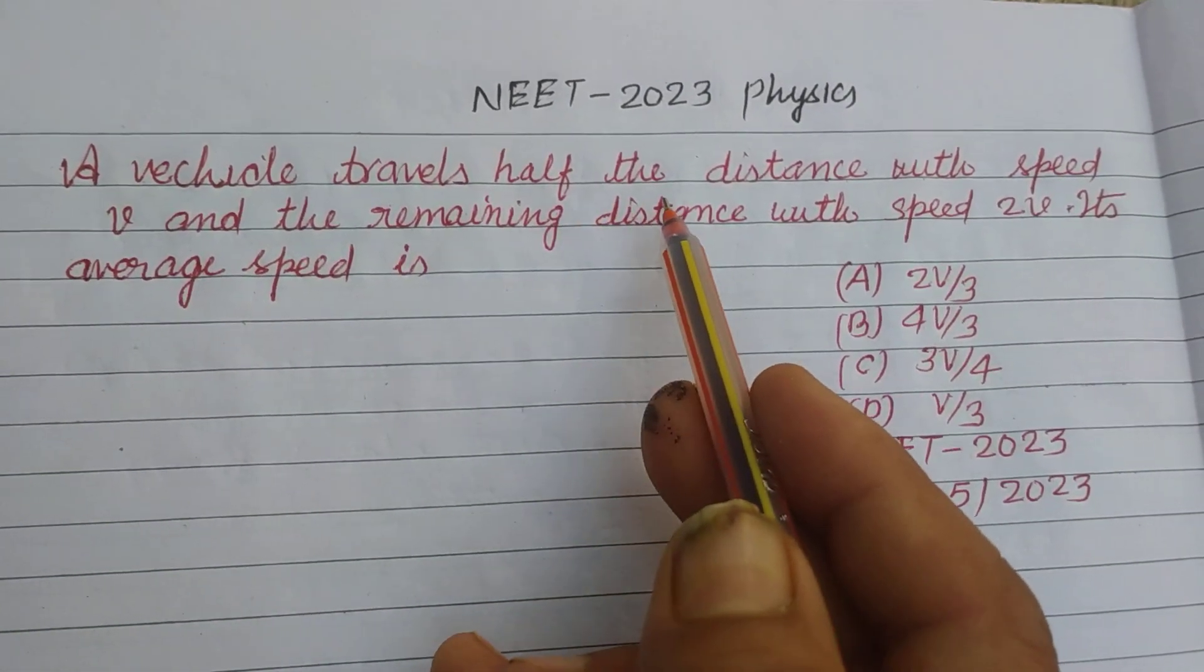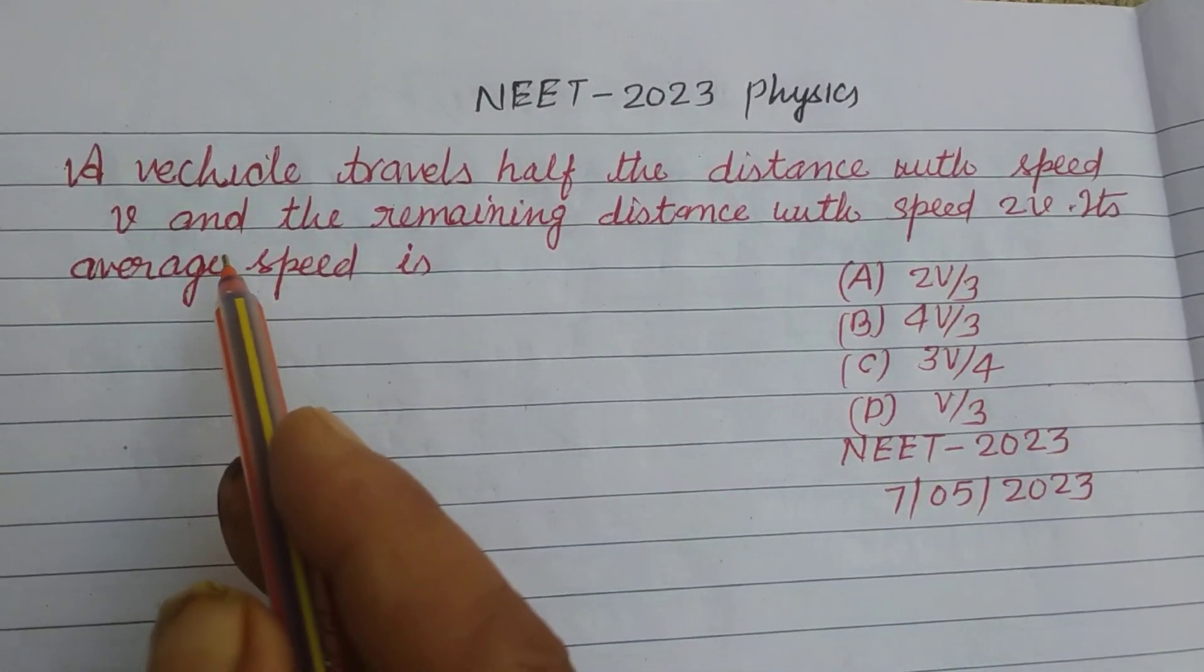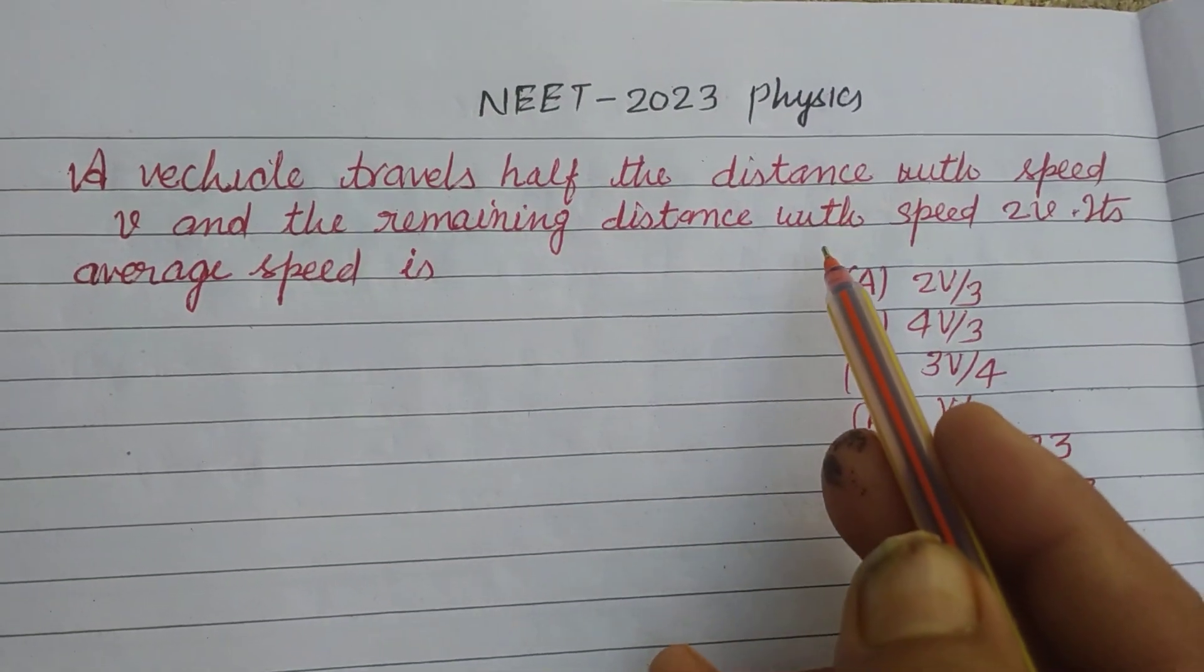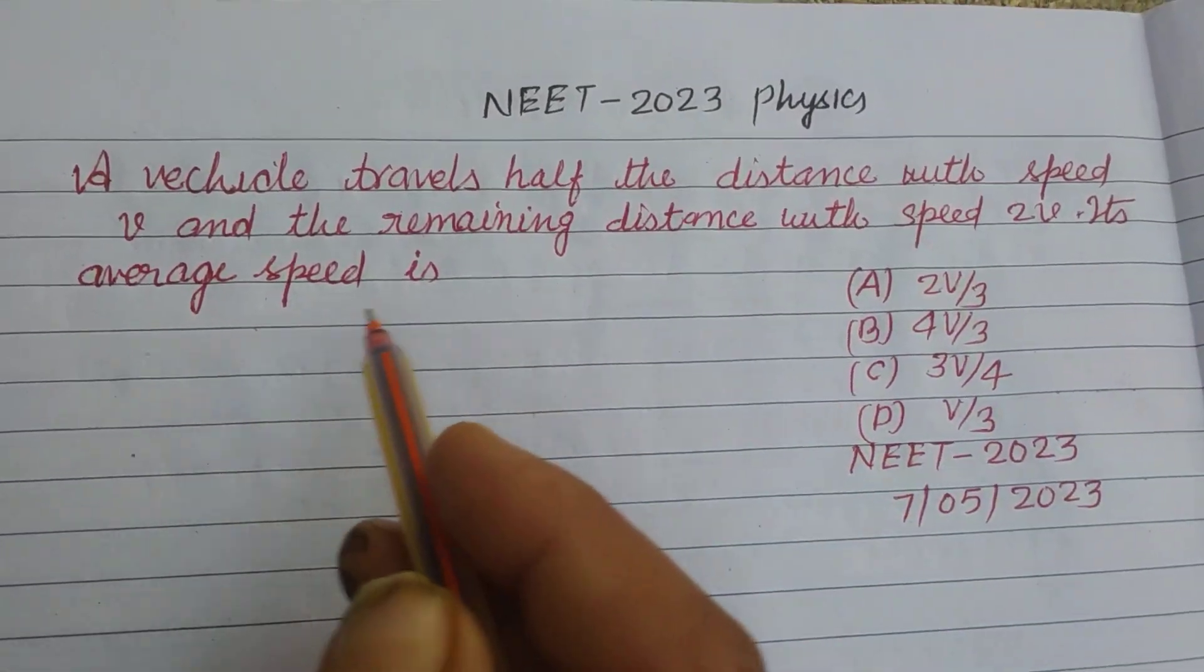A vehicle travels half the distance with speed v and the remaining distance with speed 2v. Its average speed is?